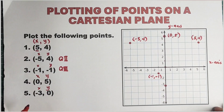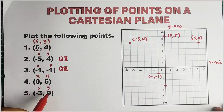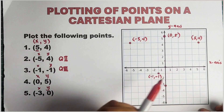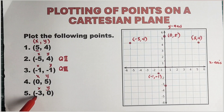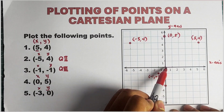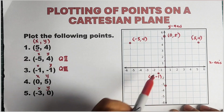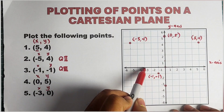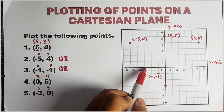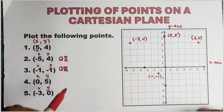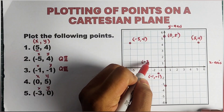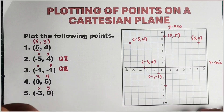Now let's have the fifth ordered pair, which is negative 3 and 0. The value of your x-coordinate is negative 3, while your y is equal to 0. We will start at the origin. Since the x-coordinate is negative 3, we will go through the x-axis and move 3 units to the left: 1, 2, and 3. We will stop here. Now let's consider the value of your y-coordinate, which is 0. Since that is 0, we won't move. So this is the exact location of our fifth ordered pair, negative 3, comma 0. We're done with plotting of points.